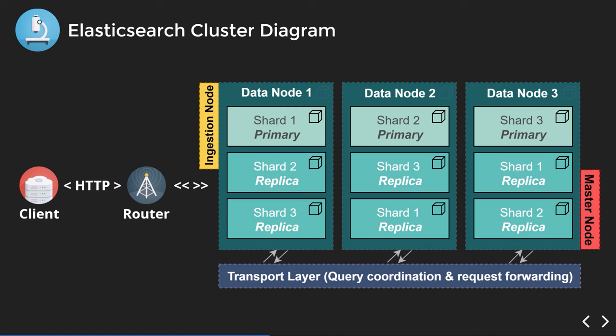Another node designation is the ingestion node — it enriches data before it gets ingested into Elasticsearch. You can define rules to clean the data that execute before it arrives in Elasticsearch. The master node is the machine from which you can only edit the cluster configuration. If you want to change fields, index types, or any configuration, it is only from that machine. This means if your cluster is compromised, you need to reach this exact machine to make any changes.